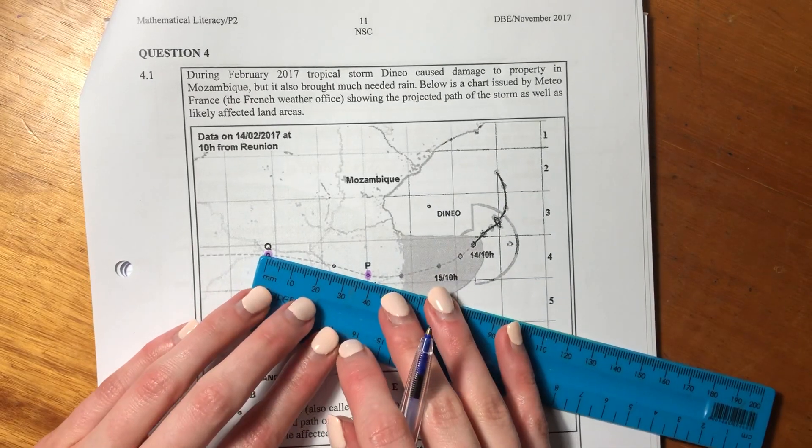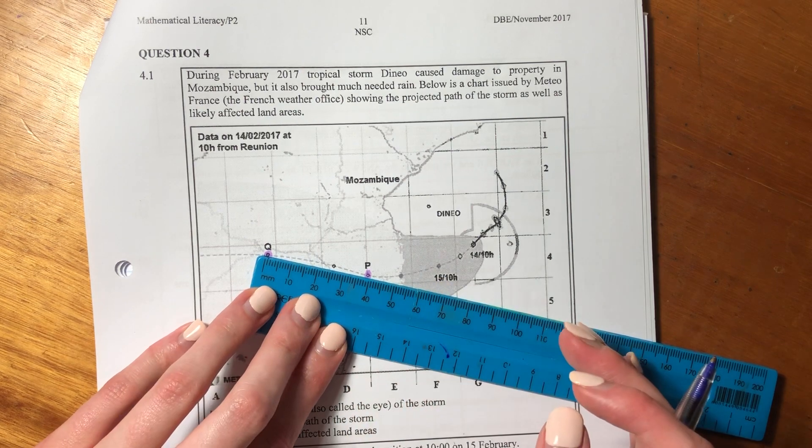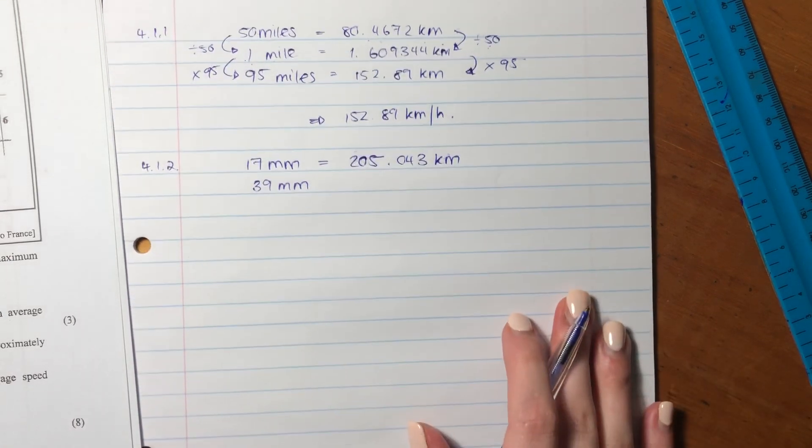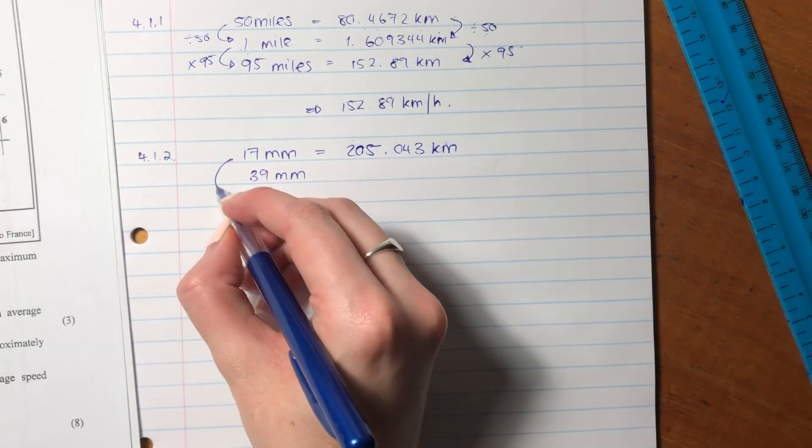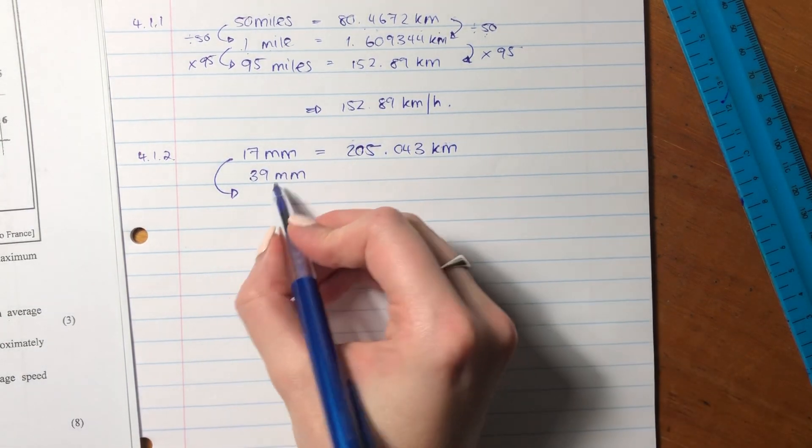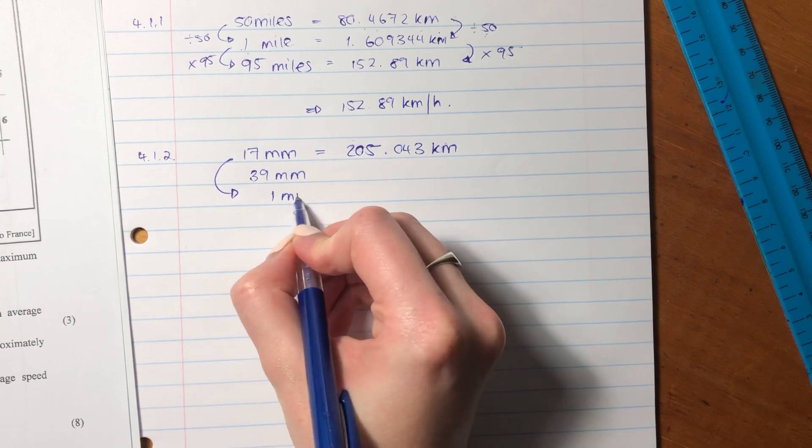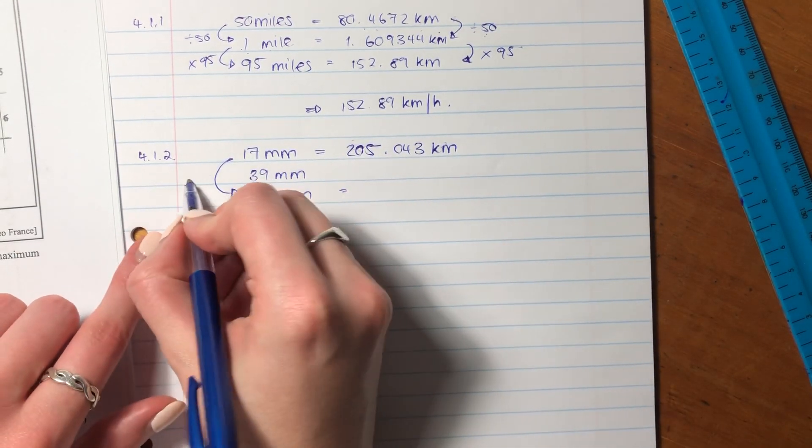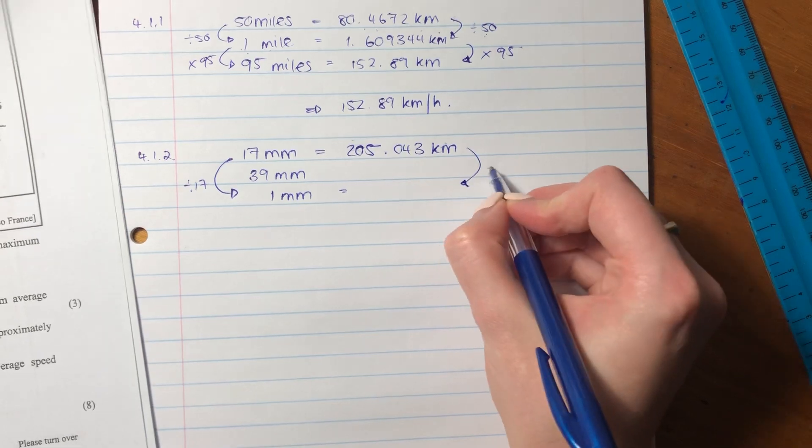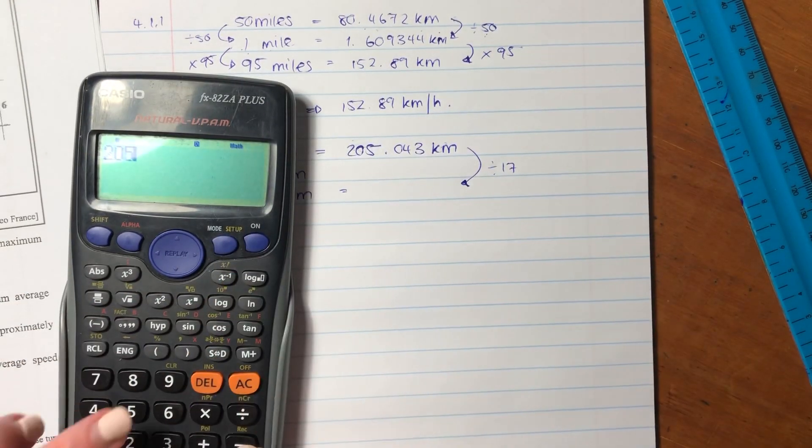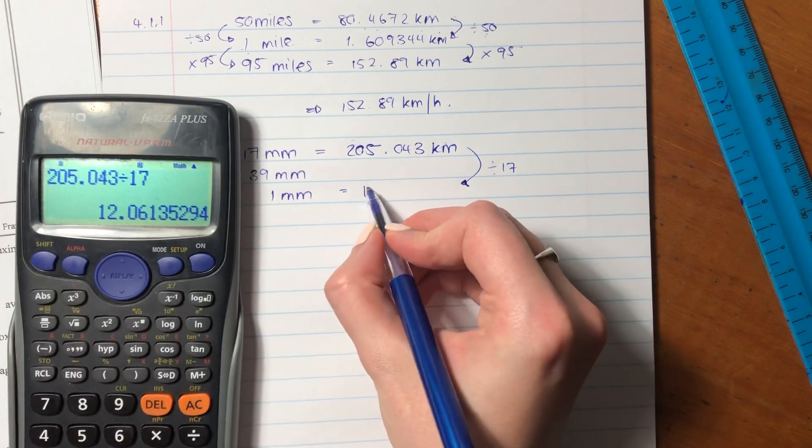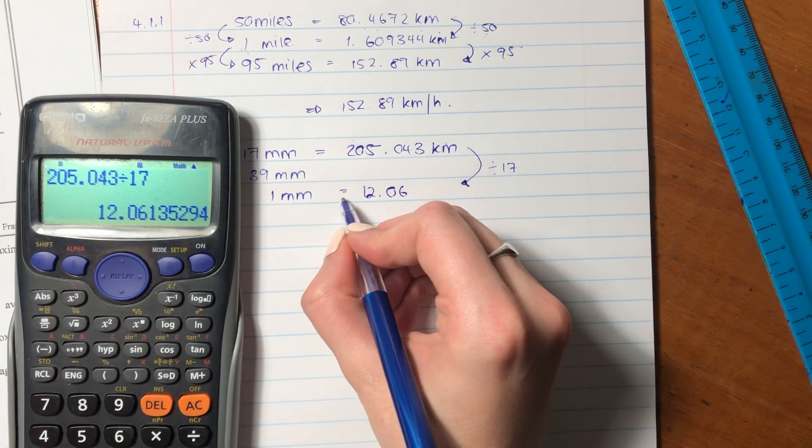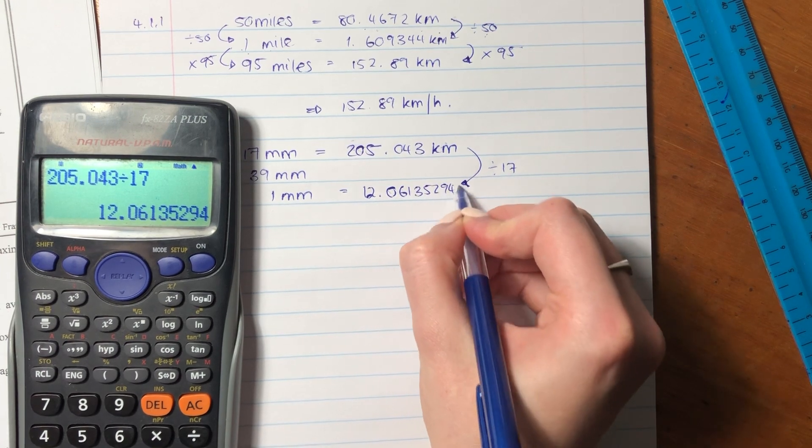So let's just write here 17 millimeters equals 205.043 kilometers in reality. Now the distance between P and Q is 39 millimeters. So let's firstly convert this into, let's make it one millimeter, and let's see how much one millimeter equals in kilometers. So what did we do to get from 17 to 1? We divided by 17. So what are we going to do on the other side? Divided by 17. You should be getting the hang of these ratios. So we see that one millimeter equals 12.06135294 kilometers.